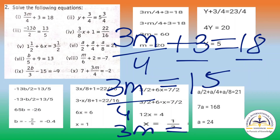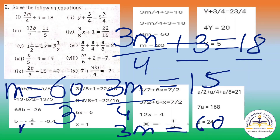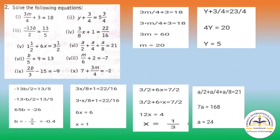Now 3m, you have to multiply 4 and 15, so 4 fifteens are 60. Now m equals to 60 by 3, you will get m equals to 20. So m equals to 20 will be the answer.